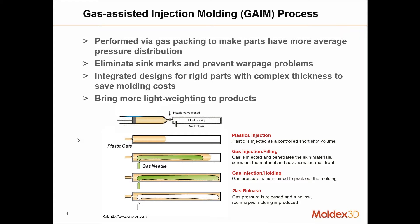Looking at what goes into the gas assisted injection molding process: if you joined part one of this lightweighting series you would have seen microcellular injection molding or foaming. Gas assisted injection molding is very similar, except instead of distributed bubbles we're applying a bulk gas. That bulk gas replaces a vast majority of the material in the part, which is where the lightweighting comes from. Similar to foaming, the injected gas helps push material out to the end of fill, removing much of the need for packing — the gas packs out the part rather than applying constant pressure from the injection point.